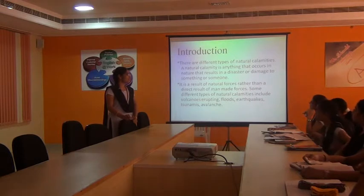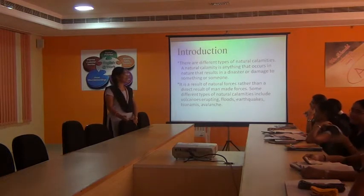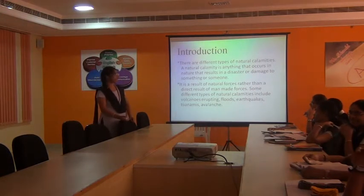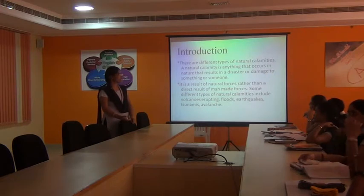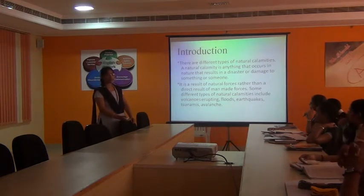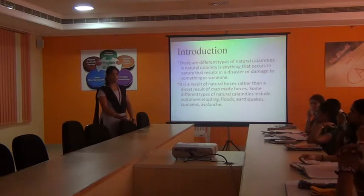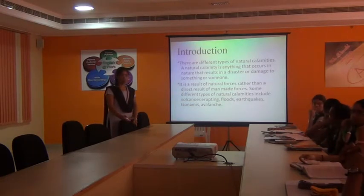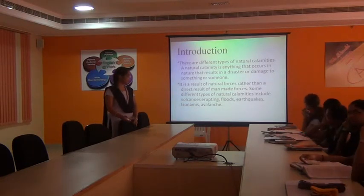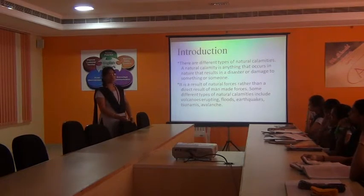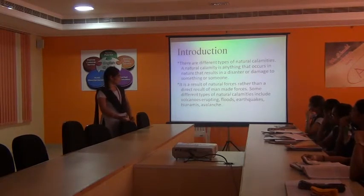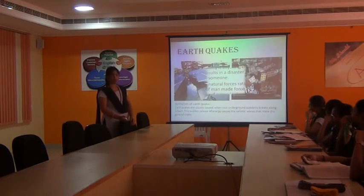There are different types of natural calamities. A natural calamity is anything that occurs in nature that results in disaster or damage to something or someone. It is a result of natural forces rather than a direct result of man-made force. Some different types of natural calamities include volcanic eruption, earthquakes, avalanche, etc.